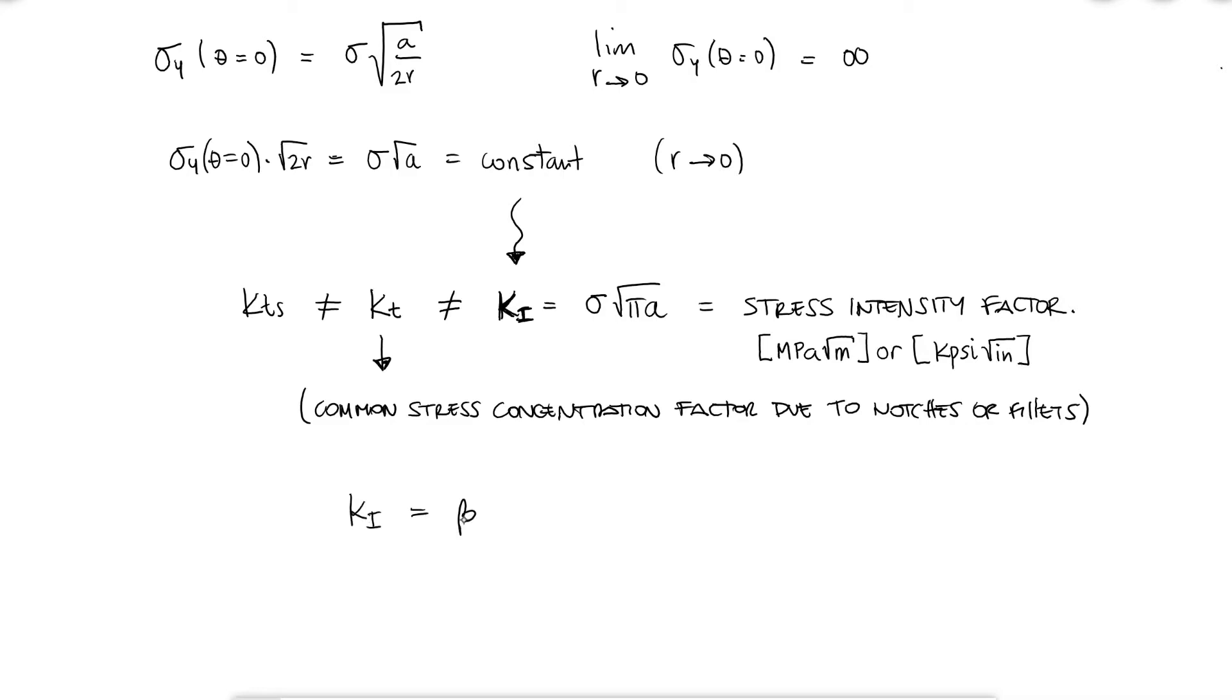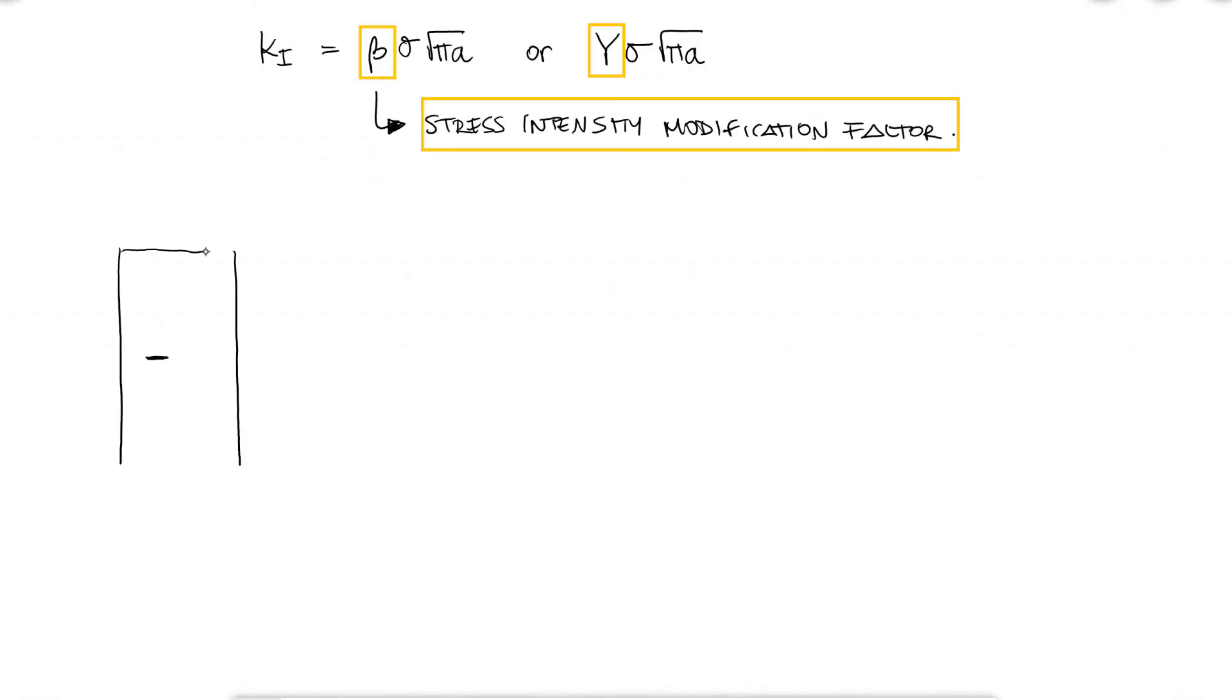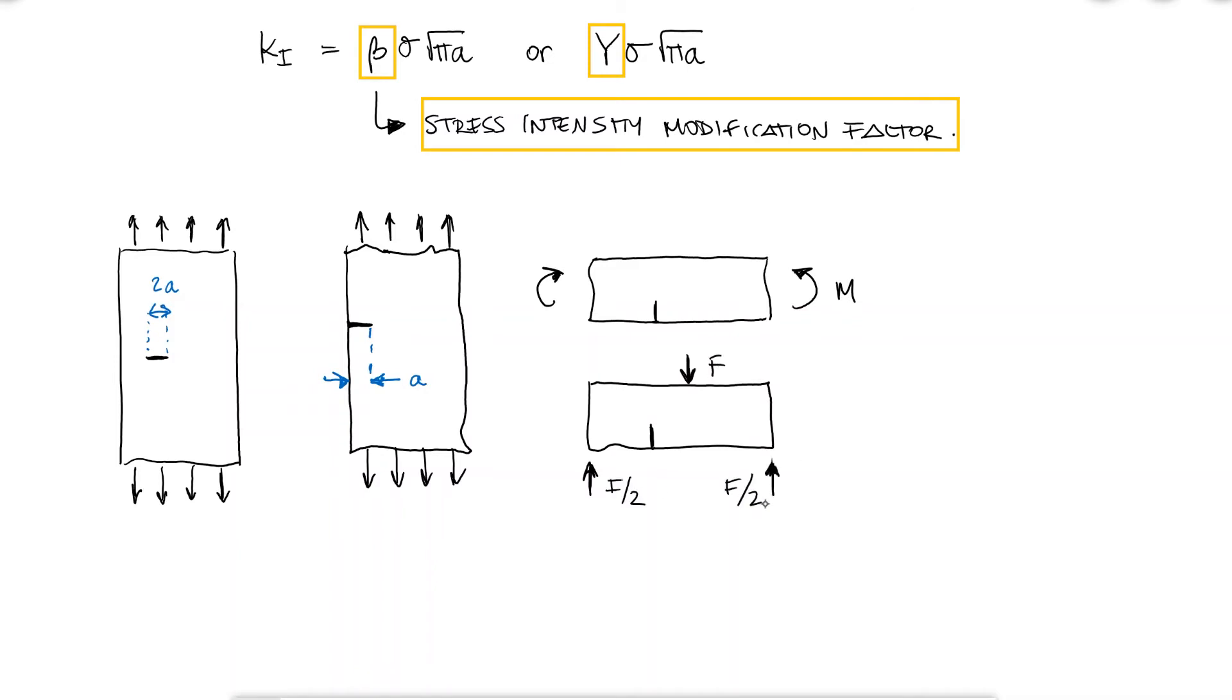And for this, we use a stress intensity modification factor for which either beta or capital Y is used. A few examples for this stress intensity modification factor include a crack inside a plate in longitudinal tension, a crack at the edge of a plate loaded in longitudinal tension, rectangular cross-section beams that have an edge crack or cracks inside a circular hole inside a plate in tension.